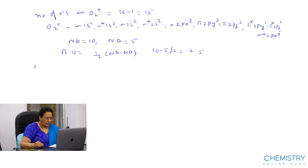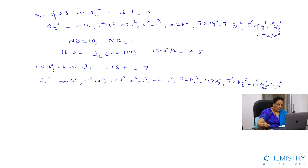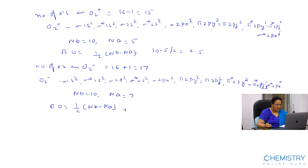Similarly, for O2-, the number of electrons is 16 plus 1, equal to 17. In this case, bonding electrons equal 10 and anti-bonding electrons equal 7. So bond order equals (1/2)(Nb - Na) = (10 - 7) / 2 = 1.5.